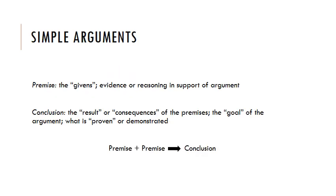When we think about arguments in their most basic form, we can think about them as having essentially two components. First, there's the premise or the premises. These are the things that you start from — the givens, what's given to you as fact or knowledge that you're using to make your argument, to prove your claim. So this is the evidence, the reasoning, the principles that you're using to make your claim.